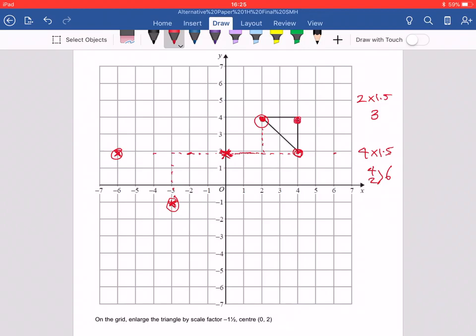And I'll do the same thing with this last point over here. So to get to that point, we're going to cross by 4 and up by 2. So 4 times 1.5, we said, is 6. So we're going to go across by 6 and up by 2. 2 times 1.5 is 3. So we're going to go across by 6 and up by 3 normally.